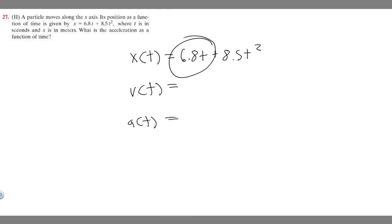The derivative of 6.8t is just 6.8 plus 8.5t squared. We move the 2 down, subtract 1. It's going to become 17t. So this is our velocity.